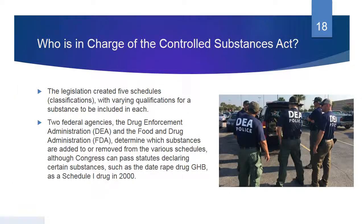Two federal agencies — the Drug Enforcement Administration and the Food and Drug Administration — determine which substances are added or removed from the various schedules. Although Congress can pass statutes declaring certain substances a Schedule 1 drug, as they did with the date rape drug GHB in 2000 when they reclassified it. Sometimes when there is a significant political push, you do see statutes and legislation being passed to recategorize. This is why it's so important to vote and participate in the political system of your country.